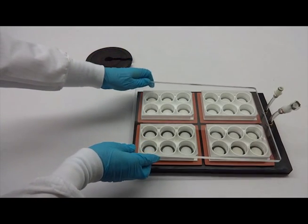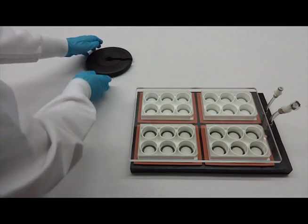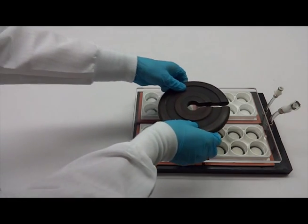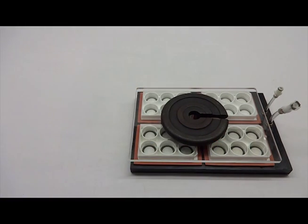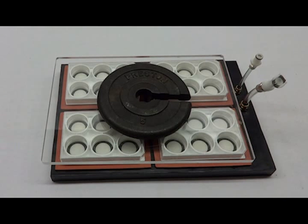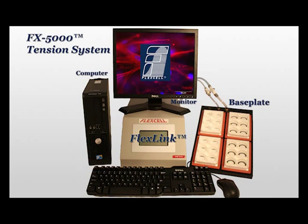place the clear acrylic window over the culture plates. If needed, five to ten pounds or 2.3 to 4.5 kilograms of additional weight may be placed over the window to help seal the base plate. Your tension base plate is now ready for use.